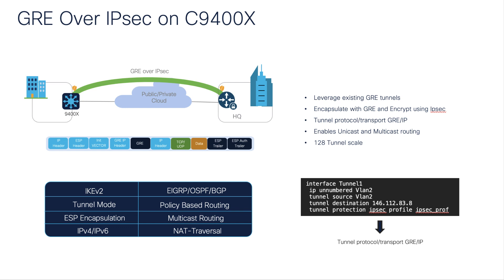In terms of security features, we are now supporting GRE over IPSec capability on the 9400X platform. GRE can encapsulate several packet types such as Unicast, Multicast, Broadcast, or MPLS. However, GRE does not provide any type of protection for the transmitted payload. The GRE over IPSec feature allows flexibility for using GRE along with IPSec security. This feature is already supported on other platforms and is now being added to the 9400X platform.